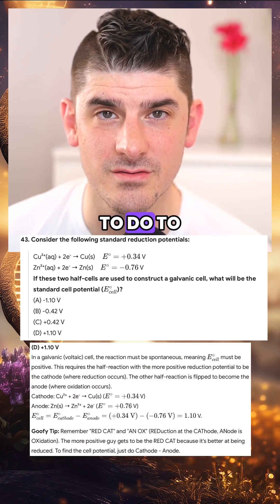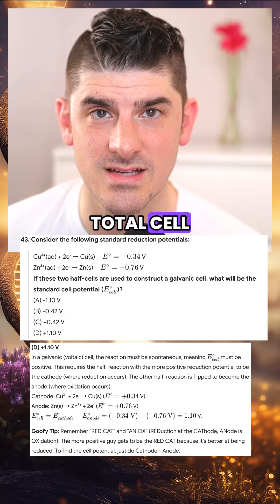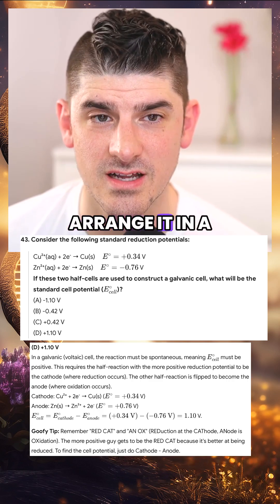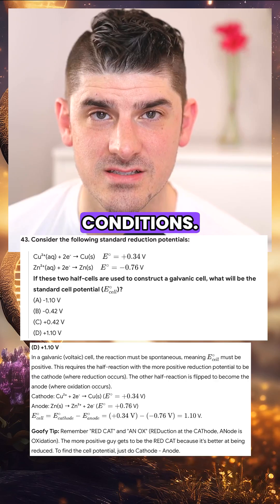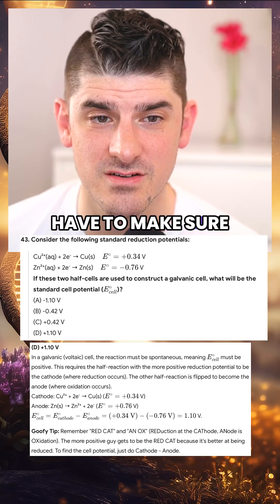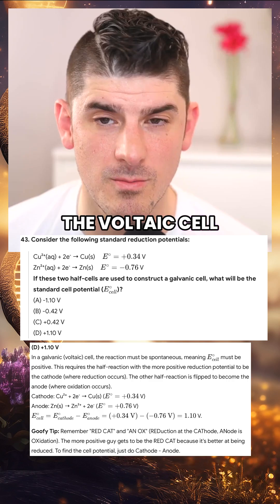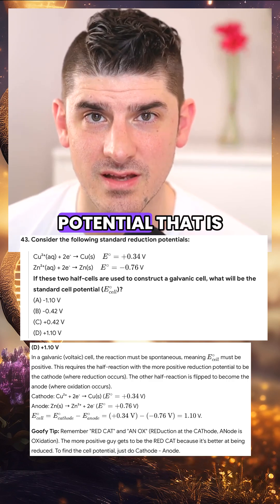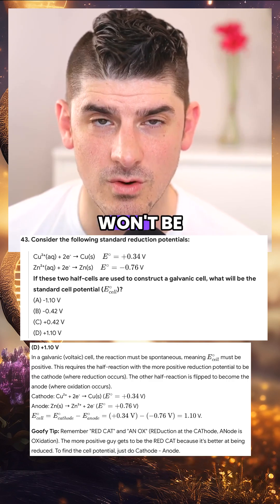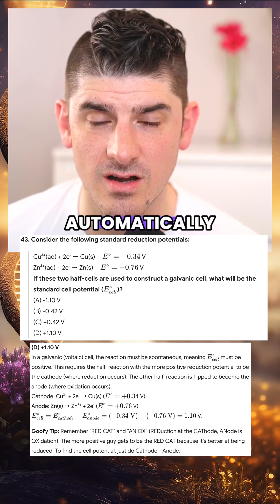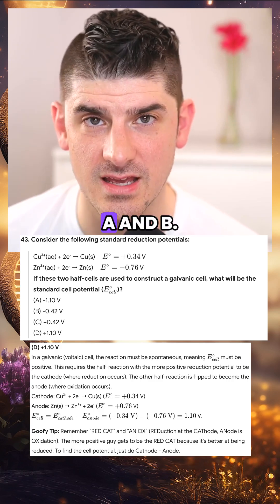Now what we have to do to construct the total cell potential here is we have to arrange it in a way that matches a couple conditions. For one thing, we have to make sure that it is spontaneous and the galvanic cell must have a potential that is positive or it won't be spontaneous. This automatically rules out option A and B.